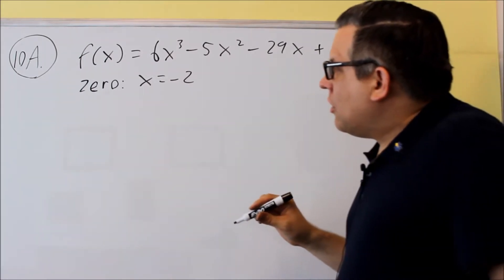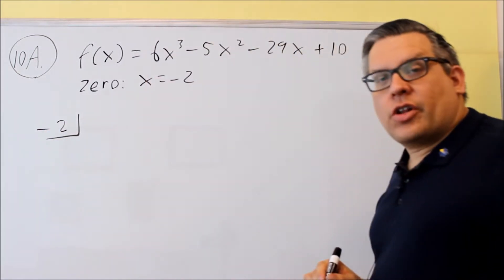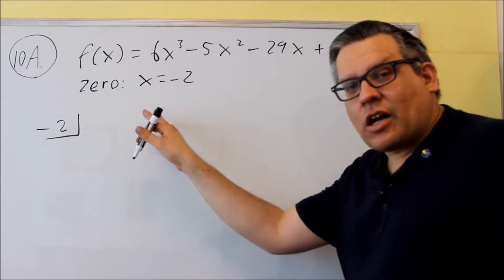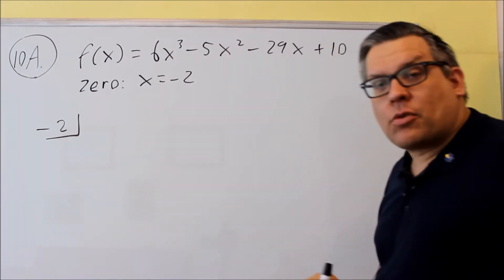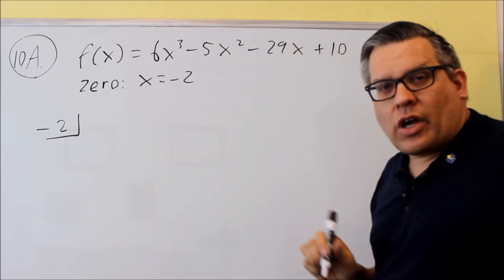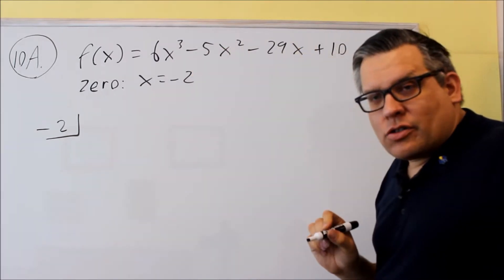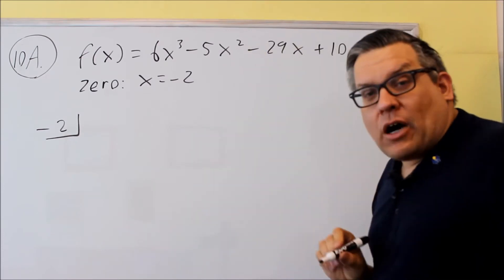Let's do that. First of all, when you set this up with synthetic division, you're going to put the zero in there just like it is. We're not going to change the sign on it. You're going to put all the coefficients of this, so as always, make sure you have descending powers and make sure you don't have any powers missing. If you have a power missing, you've got to put a 0 placeholder.